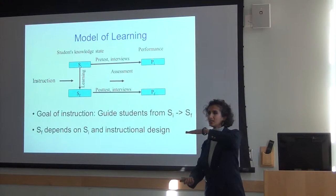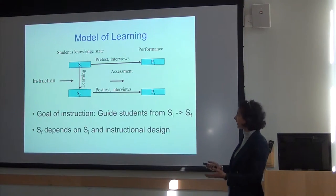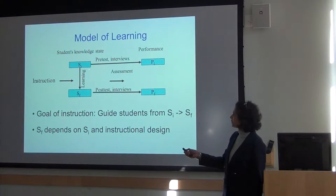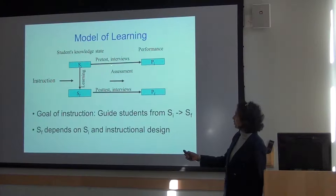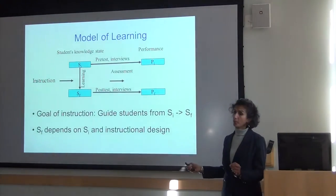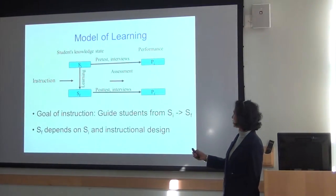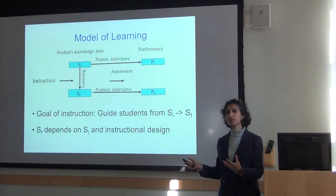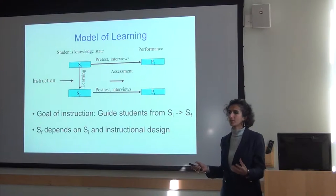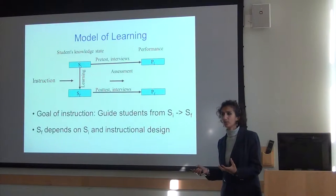You can only build on the initial knowledge students have. If you don't think about where students are at the beginning, it's very difficult to build on that knowledge. Otherwise, these things will be like two orthogonal polarizers — if their initial knowledge and where you are targeting instruction are not well aligned, learning is not going to be meaningful. A pretest or one-on-one interviews can reveal where students are. The same applies to the final knowledge state: a superficial test won't really measure the kind of learning you expect.